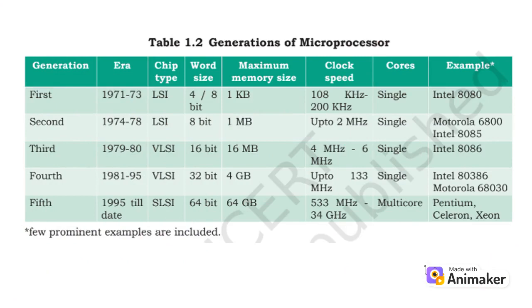Here we can see the generations of microprocessors. The notable mentions are the chip type, which is LSI in the 1st and 2nd generation. This is followed by the 3rd and 4th generation having VLSI. Finally, the 5th generation has chip type ULSI. There are other aspects like memory size and examples to be considered. Please have a look at the table before proceeding.